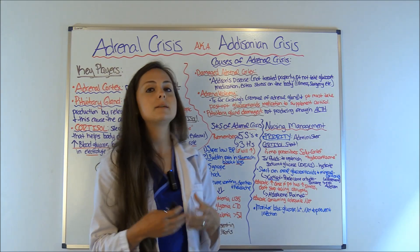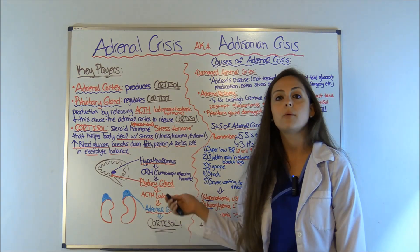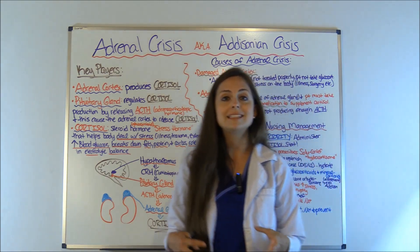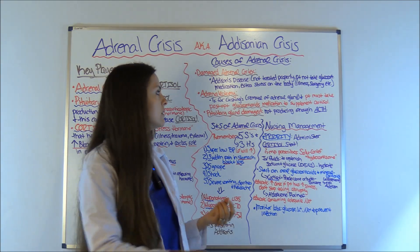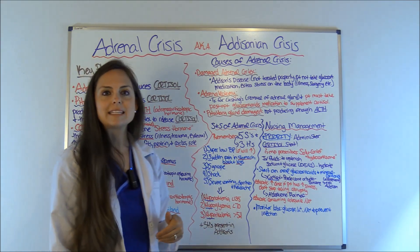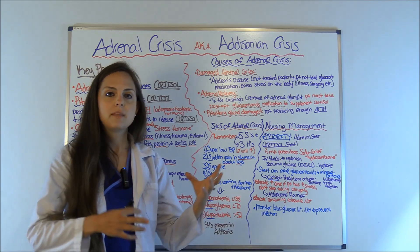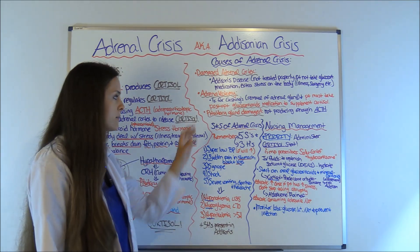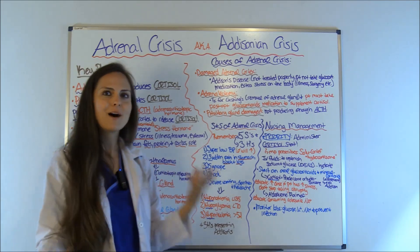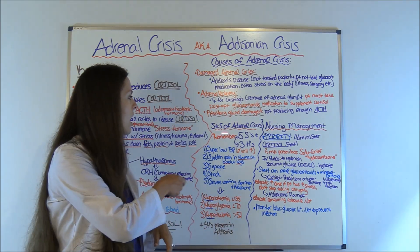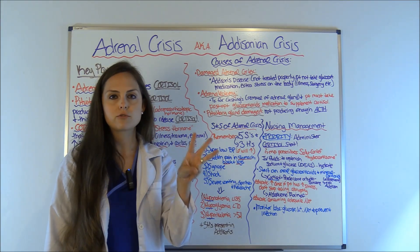Another cause is pituitary gland damage. That goes back to the negative feedback loop — if the pituitary gland is not producing enough ACTH, cortisol will not be released and you'll have low cortisol levels. Now let's look at signs and symptoms — how is this patient going to present to you as a nurse? This is a topic that professors and the NCLEX like to pull test questions from, so pay attention to the signs and symptoms and nursing management.